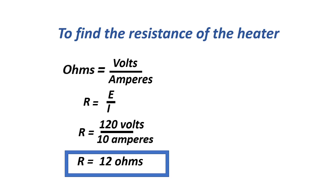To find the resistance of the heater: ohms equals voltage over amperes, or R equals E over I. Equals 120 volts over 10 amperes. Our resistance is 12 ohms.